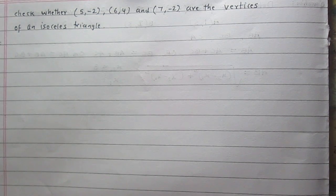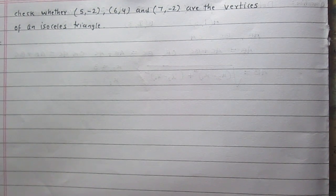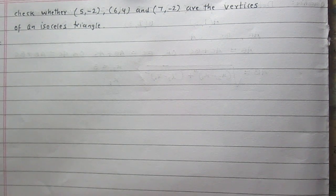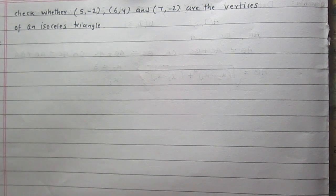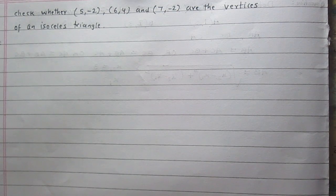Check whether the points with coordinates (5, -2), (6, 4), and (7, -2) are the vertices of an isosceles triangle. In this question, we are given three points and we are to check whether the triangle formed by these three points is an isosceles triangle or not.